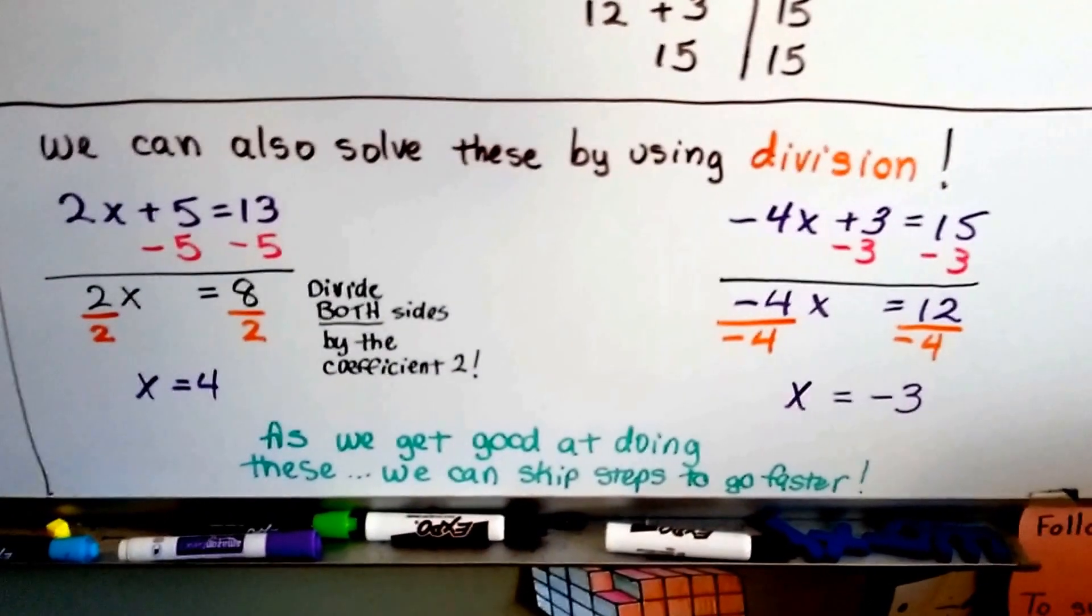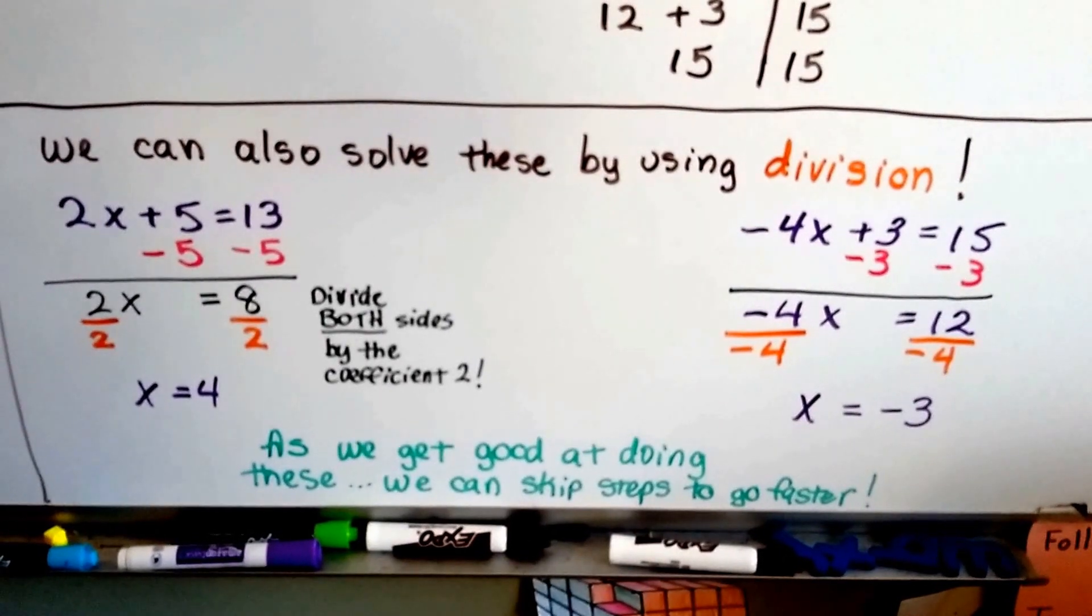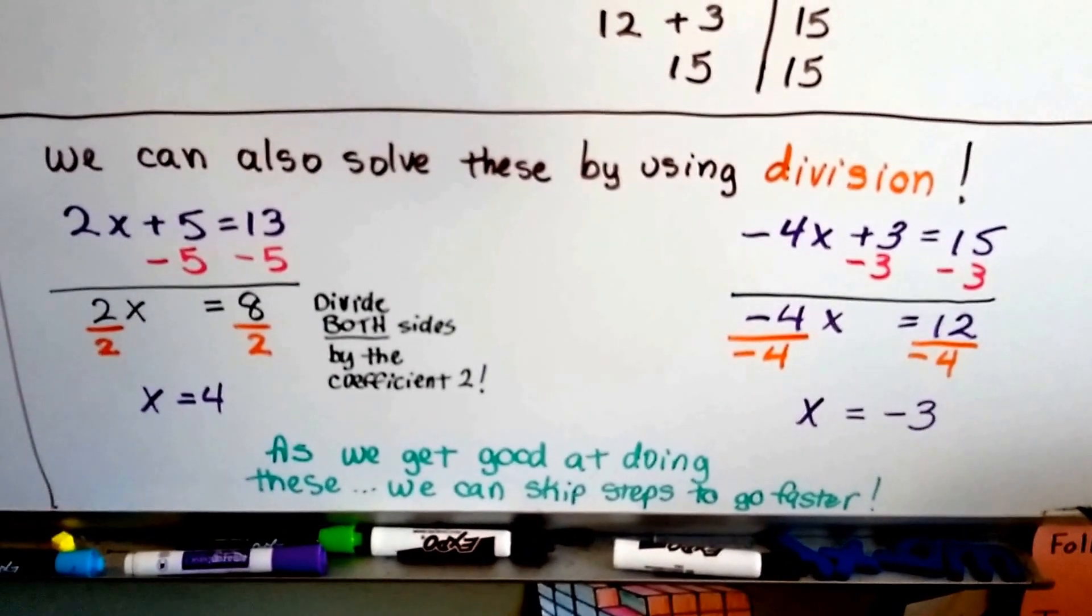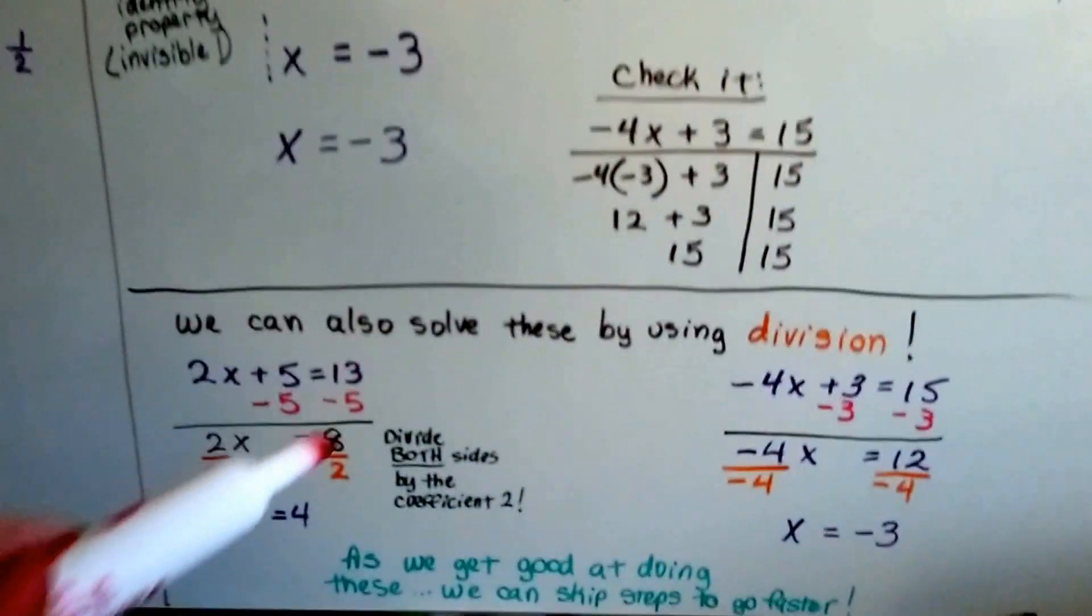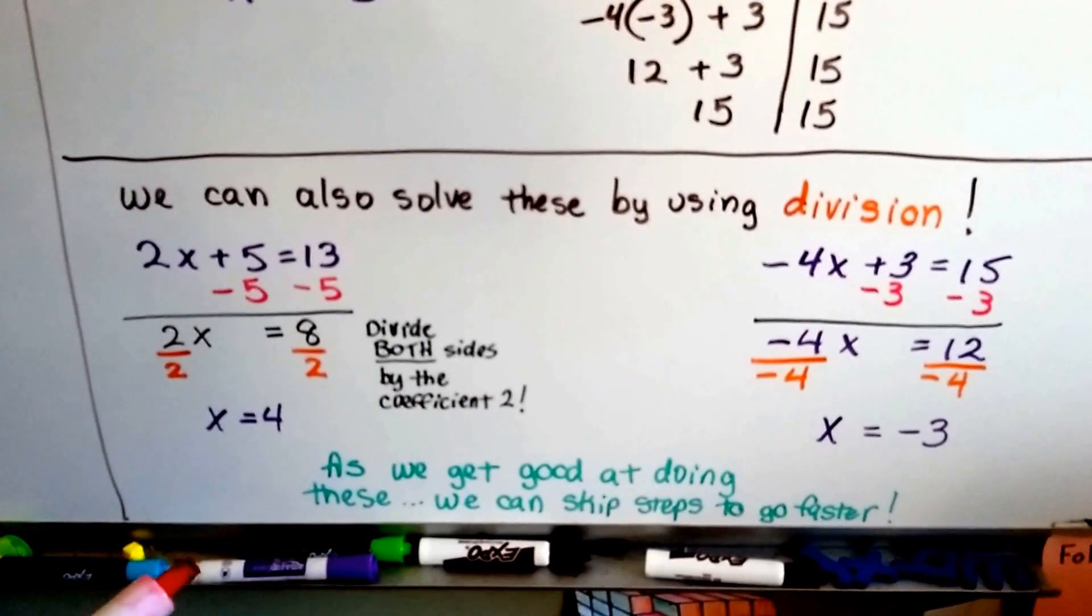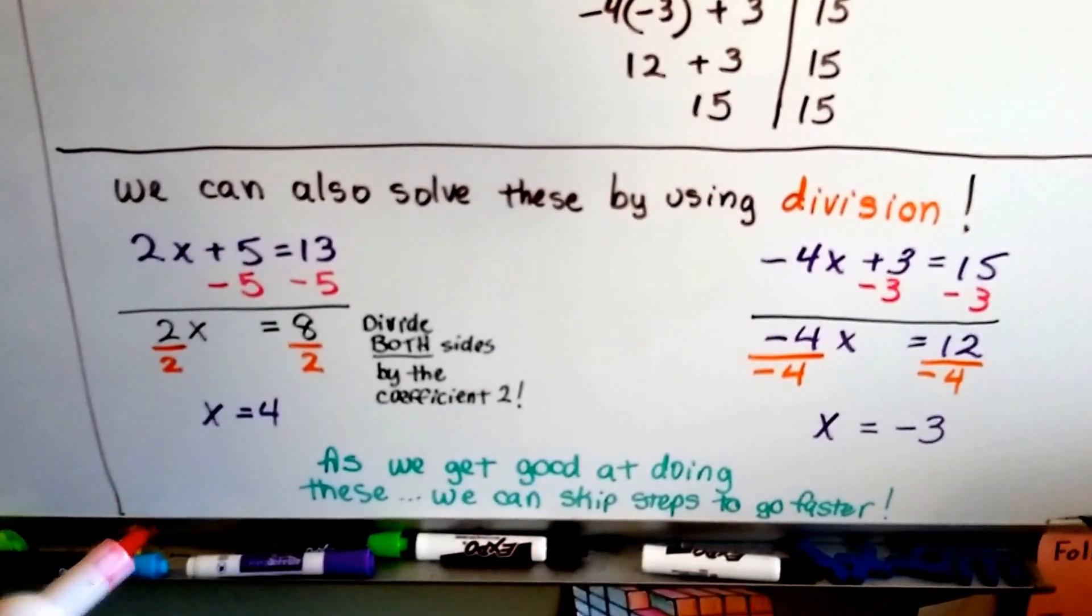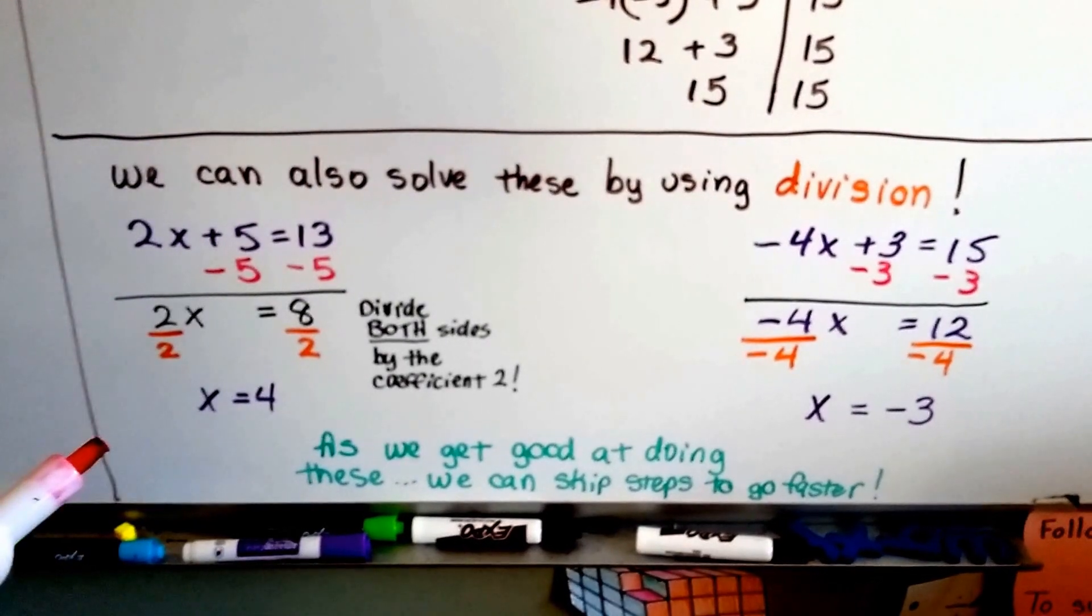Now, we can also do this using division. Did you know that? It's much quicker. As we get good at doing these equations with creating zero pairs, we start to go faster and faster. And because multiplication is the inverse of division, we can use division to do this quickly and to skip some steps.